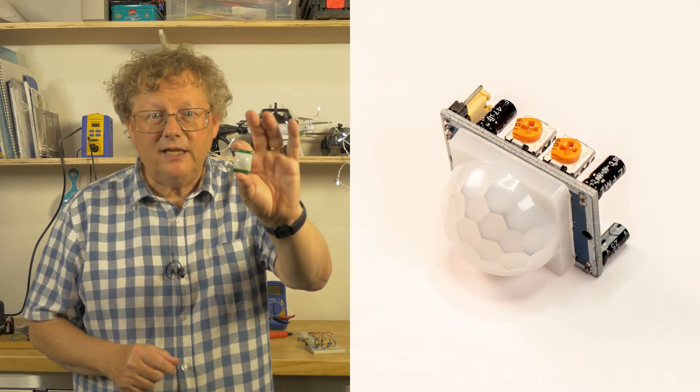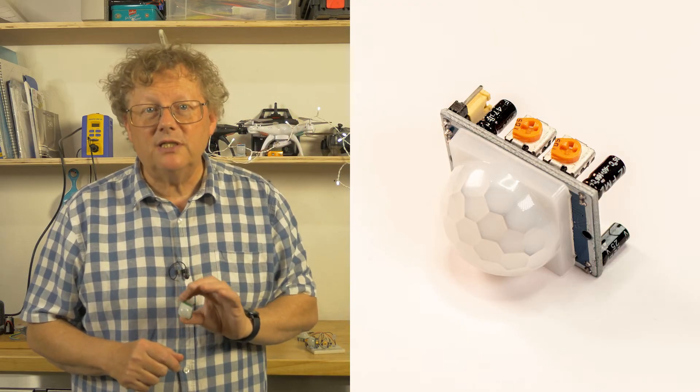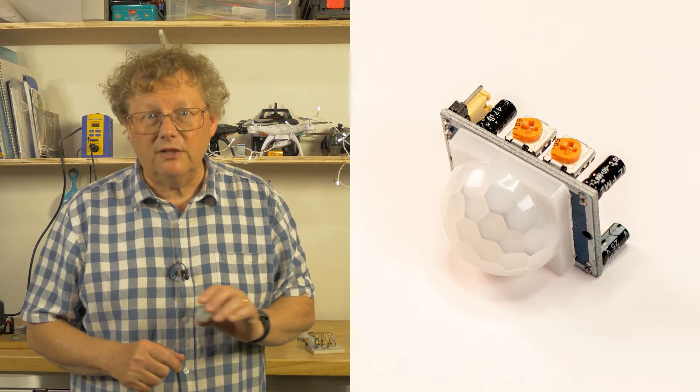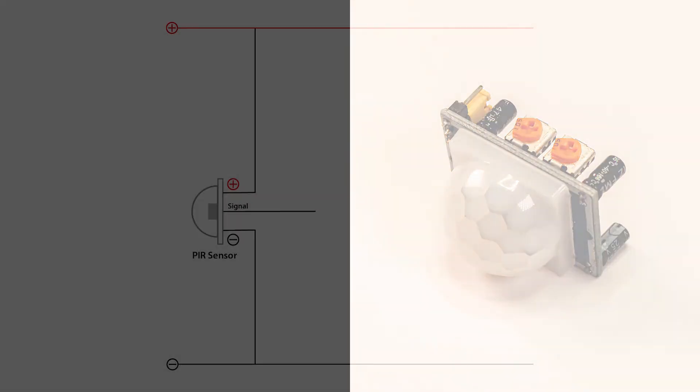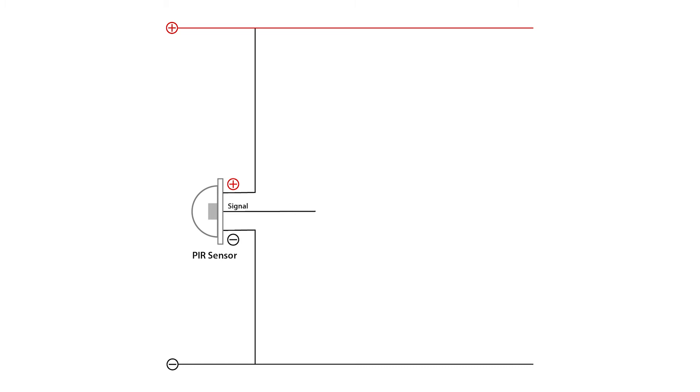The sensor has a Fresnel lens over it. This helps to direct the infrared radiation so that it can detect any changes. When it detects a change in the infrared around it the sensor triggers and the signal line goes high to around 3.3 volts. The simplest possible circuit is to connect the signal line to an LED and then to see the LED light up when motion is detected.